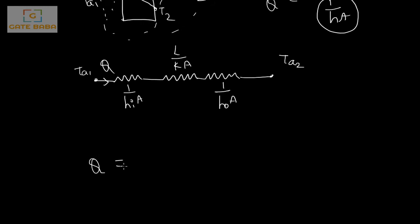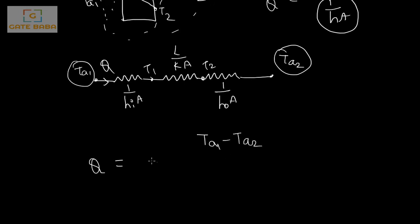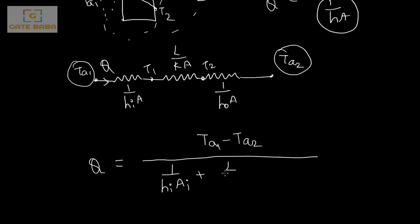The rate of heat transfer is q = (TA1 − TA2) / (R1 + R2 + R3), where R1 = 1/(H_inner·A_inner), R2 = L/(K·A) (conductive resistance of the slab), and R3 = 1/(H_outer·A_outer). These three resistances are in series.